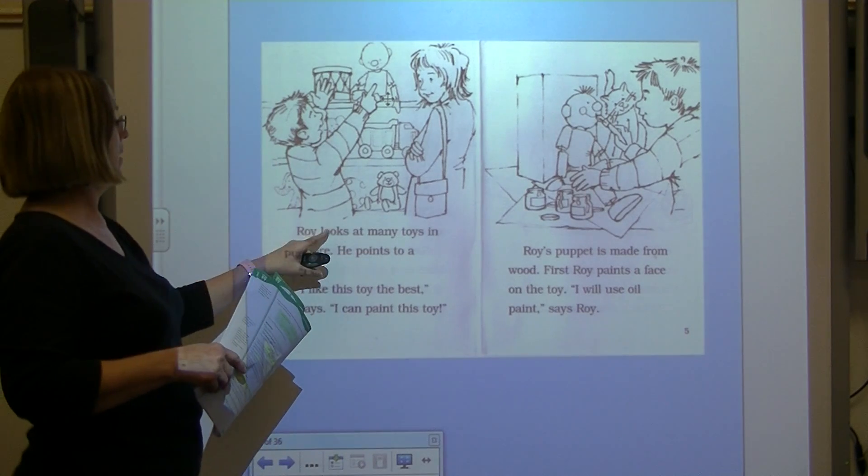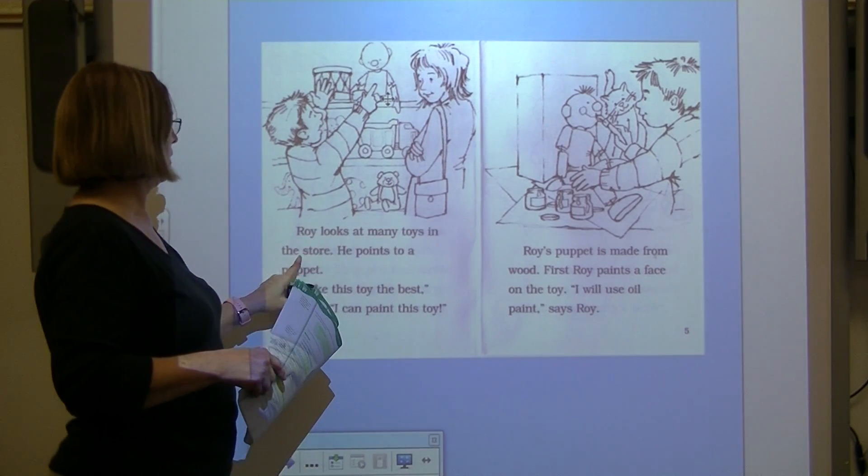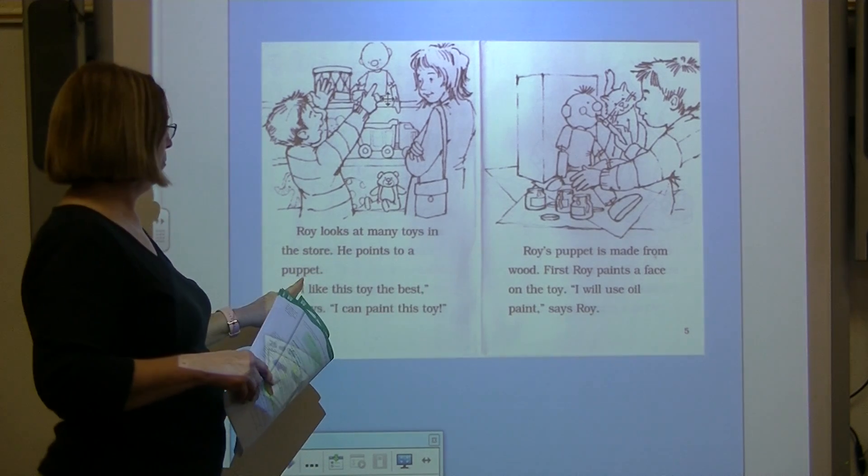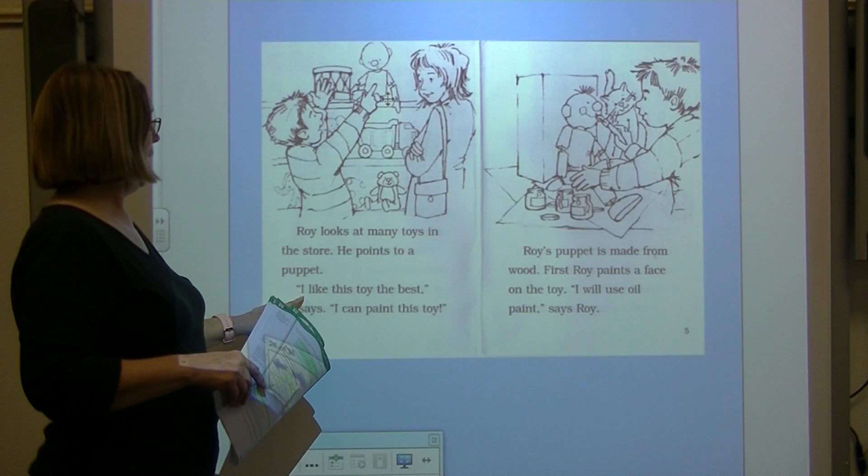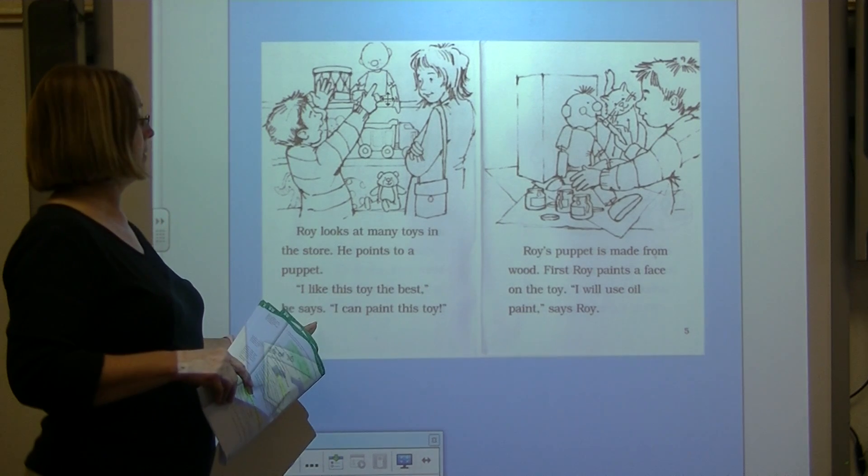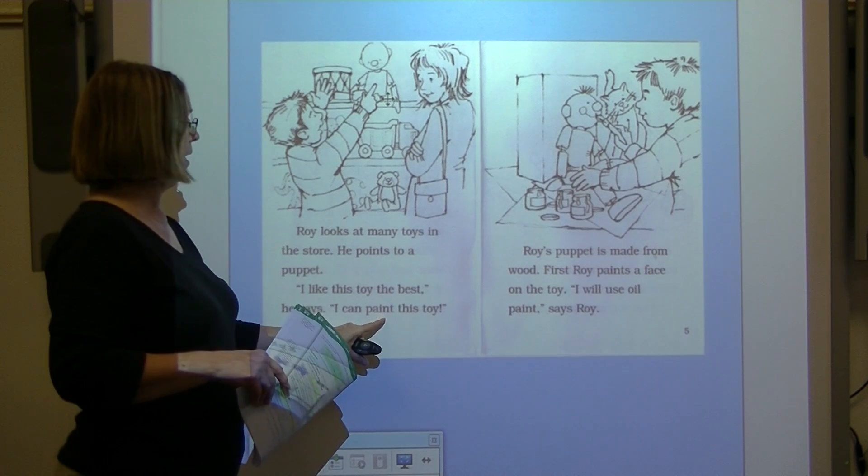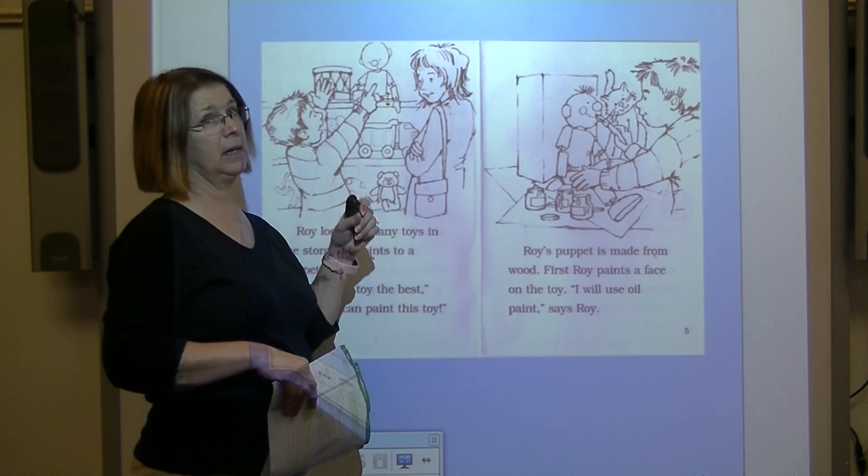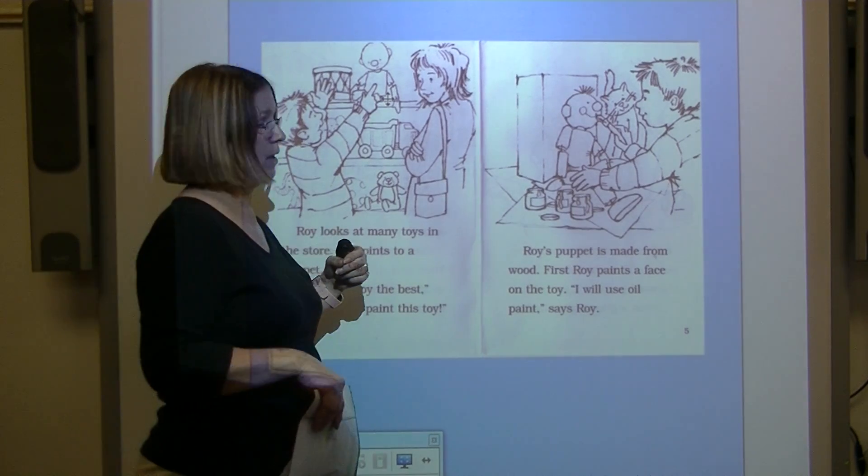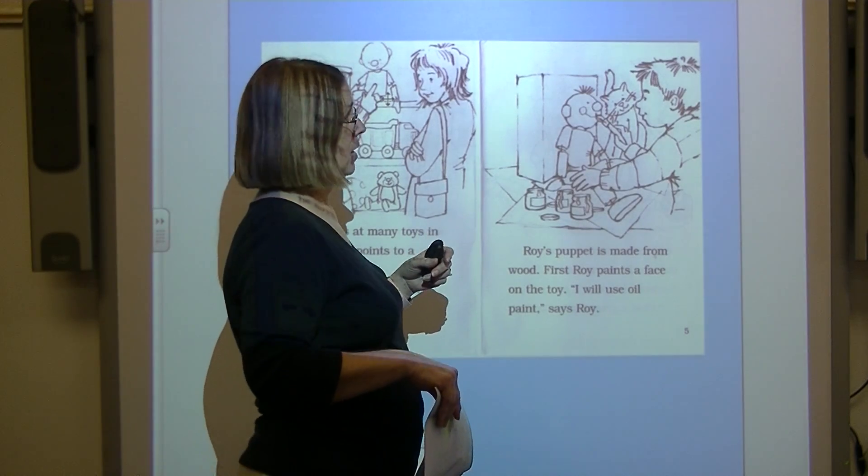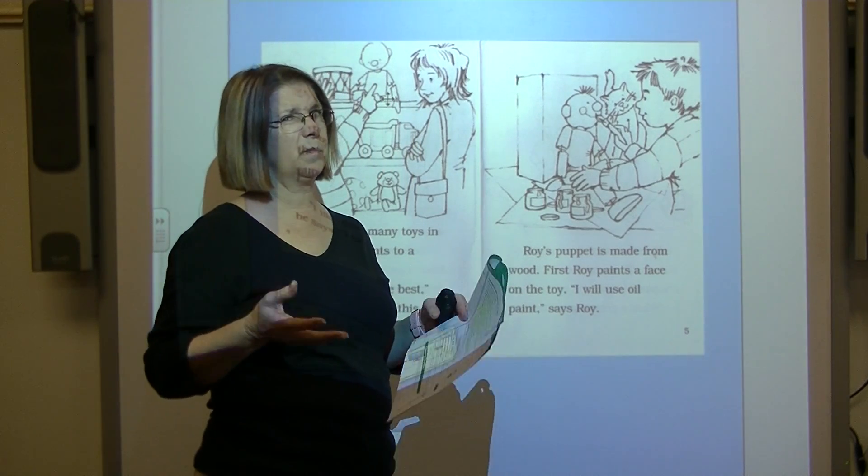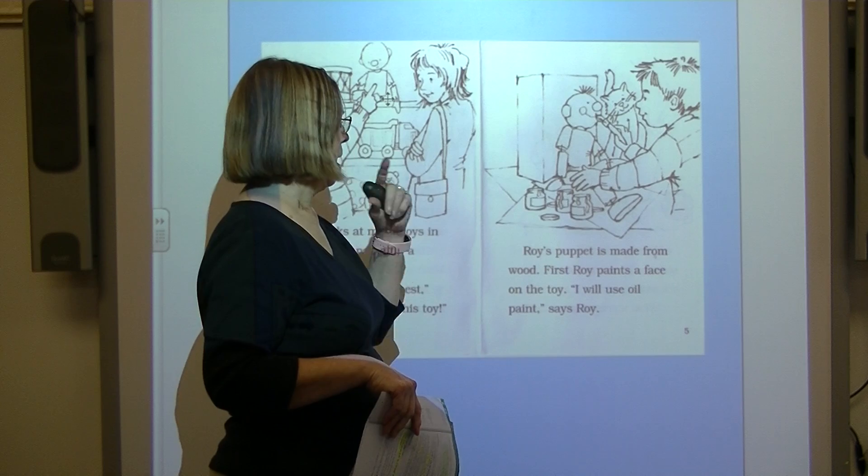Roy looks at many toys in the store. He points to a puppet. I like this toy the best, he says. I can paint this toy. So I'm thinking that must be a wooden puppet. If he's going to paint it. I have some puppets, but they're made out of cloth. So you couldn't paint that very easily. Read on.